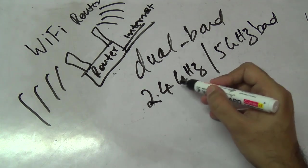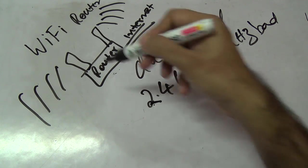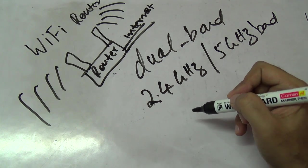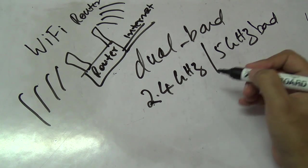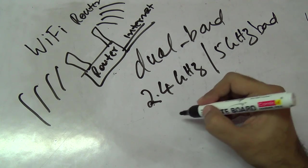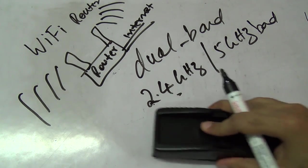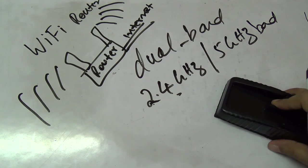Now you might ask me why do we have these two bands? The problem is that the 2.4 gigahertz band is actually very crowded space. A lot of devices, for example cordless phones, microwaves, etc., actually interfere with that.